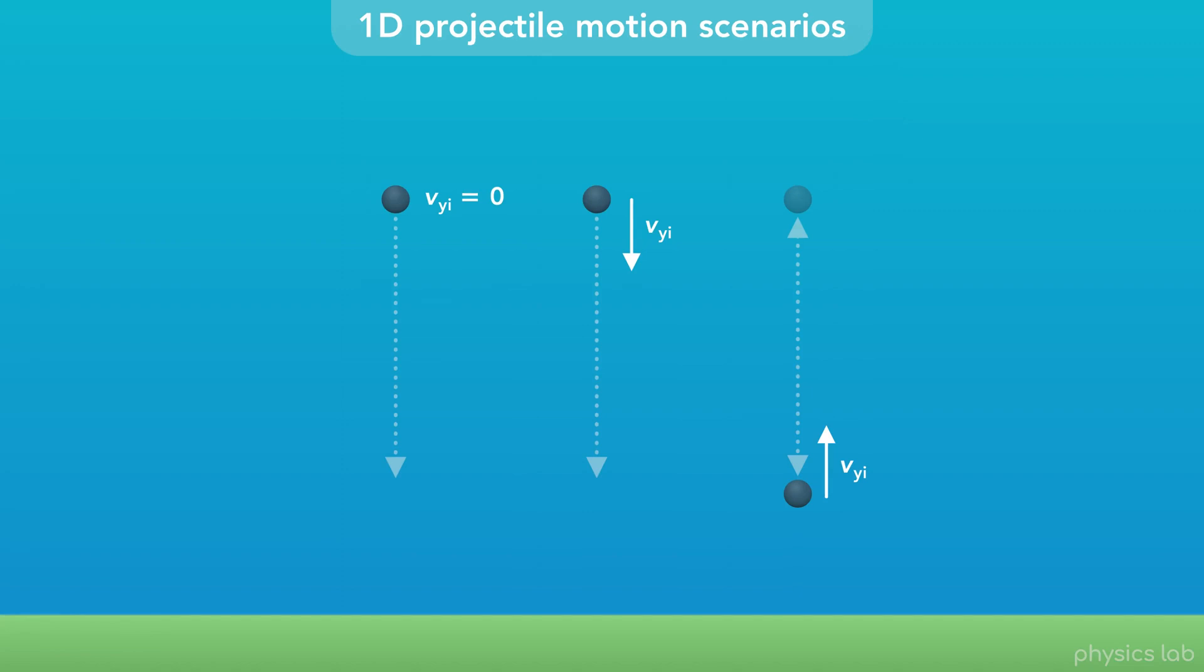In 1D projectile motion, there's only 3 initial conditions. In 2D projectile motion, we have some new scenarios. Let's say up is the positive y direction, and right is the positive x direction. If the initial angle is above the horizontal, the initial y velocity points upwards, so that's positive.